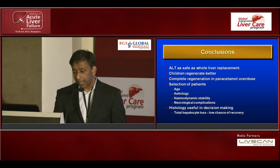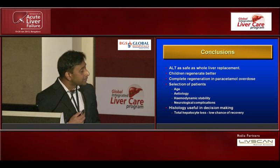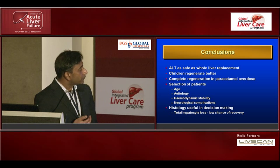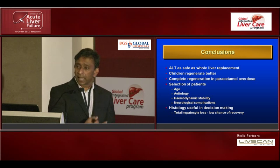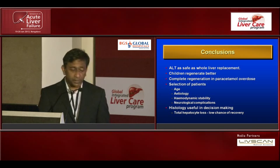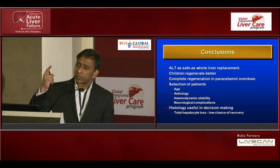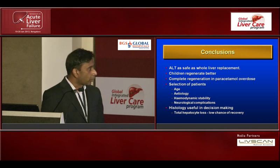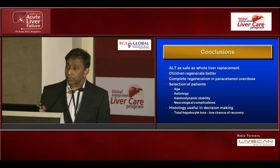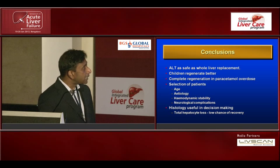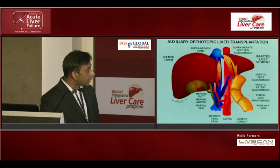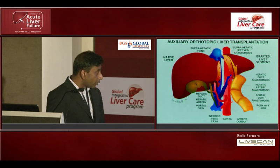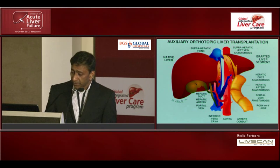In conclusion: auxiliary liver transplant is as safe as whole liver transplant replacement, and we have clearly demonstrated that. Children regenerate better and it should be offered for children whenever possible — usually only a left lateral segment is needed. Complete regeneration was seen in every patient who survived auxiliary liver transplant for paracetamol overdose. Hyperacutes, contrary to what we thought earlier, are the best indication for auxiliary liver transplant. Selection should be based on organ quality — in India, living donor transplants mean organ quality is less of an issue — hemodynamic stability, neurological status at the time of surgery, and histology.